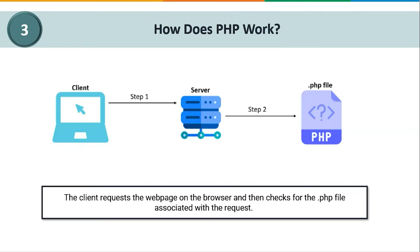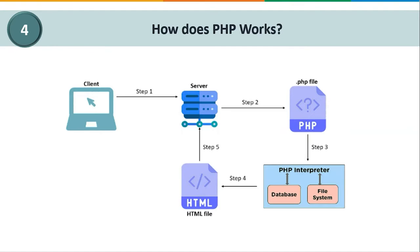If you look at this diagram, we have a client, a server, and a .php file. Basically, the client is requesting the webpage on the browser. The server where the PHP software is installed then checks for the .php file associated with the request. Whenever it finds this file, it sends the file to the PHP interpreter. PHP is an interpreted language which checks for requested data in the database. The interpreter then sends back the requested data output as an HTML webpage, since a browser does not understand a .php file.